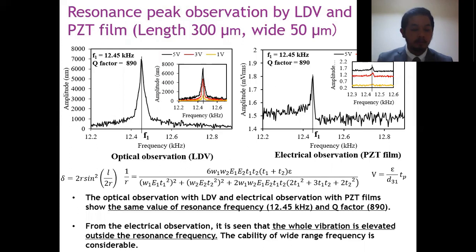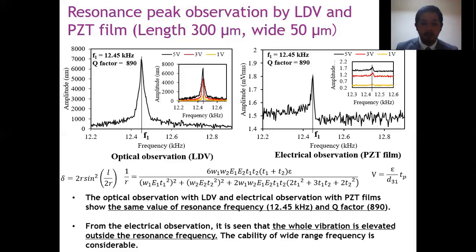Cantilever with 300 micrometer length and 50 micrometer width is used to see the signal consistency optically and electrically. It is found that both optical and electrical signal shows the same resonance frequency value of 12.45 kHz and the same quality factor of 890. From the electrical observation, it is seen that the whole vibration is elevated outside the resonance frequency. So the capability of wide range frequency is considerable. Low frequency such as biomagnetic field frequency also can be measured.